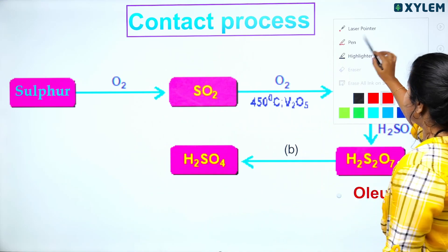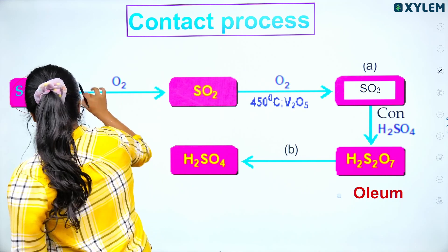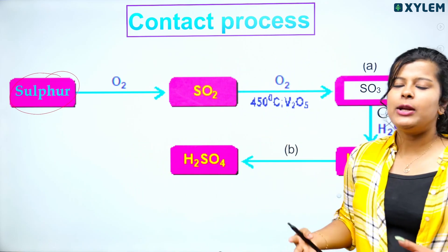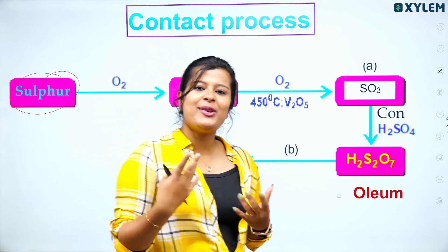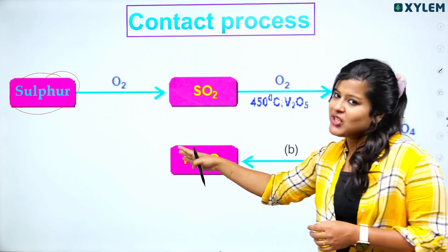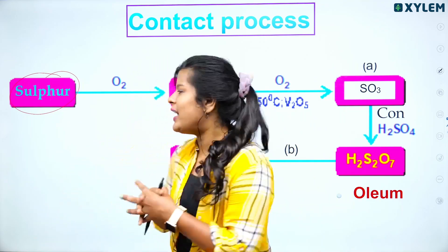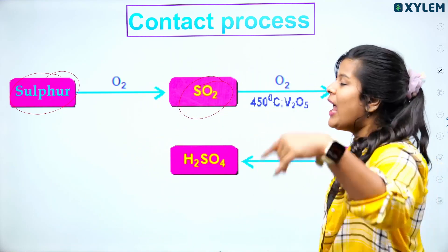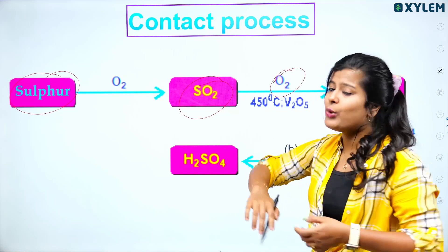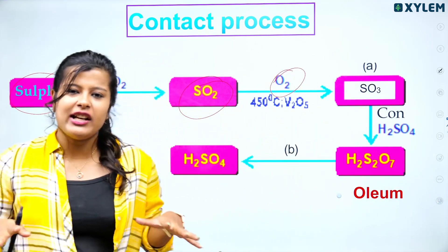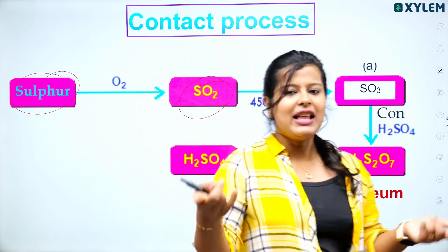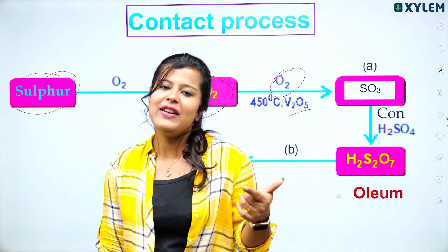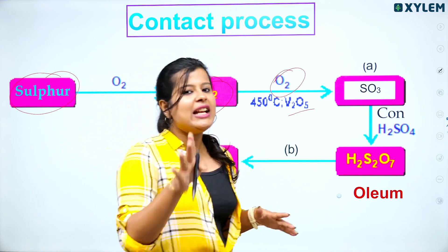Now, we add sulfur. Sulfur plus oxygen gives SO2. Then SO2 is converted further. The conditions are V2O5 — Vanadium Pentoxide — as the catalyst. SO2 plus O2, under V2O5 catalyst conditions, gives SO3. That is the catalyst: Vanadium Pentoxide, V2O5.